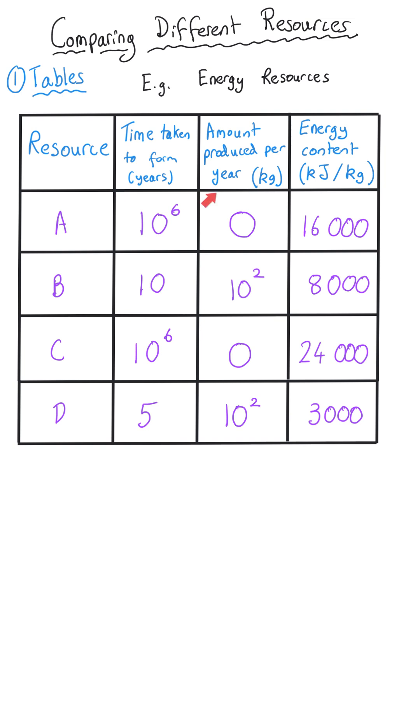And along the top we've got three extra bits of data: how long it takes these resources to form in years and the amount of this resource that gets produced each year in kilograms and the energy content of this resource in kilojoules per kilogram.